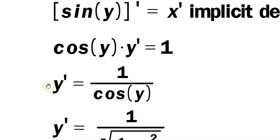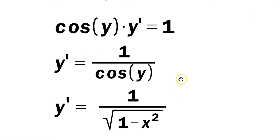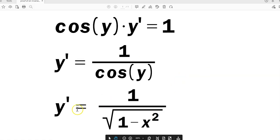Then you divide both sides by cosine, so y prime is 1 over cosine y. But as we have just spent time establishing, this is equivalent to saying y prime equals 1 over the square root of 1 minus x squared, the positive 1, for the reasons I've explained.